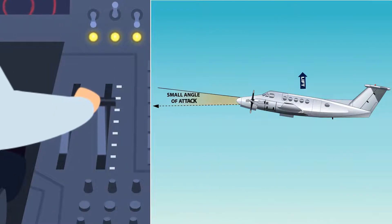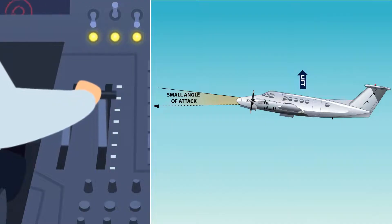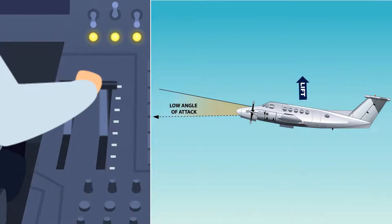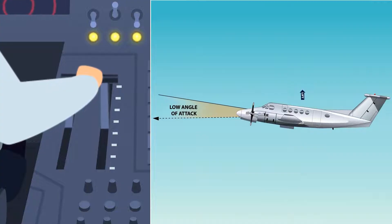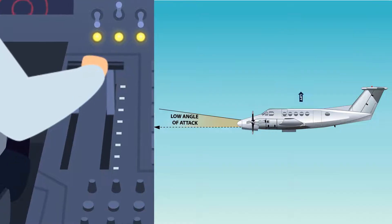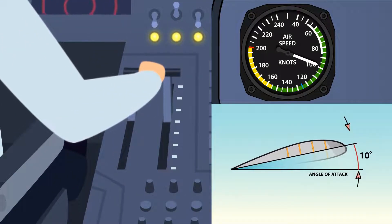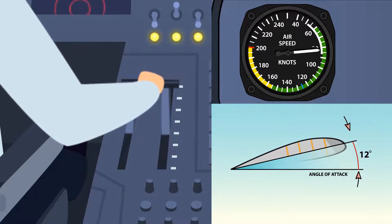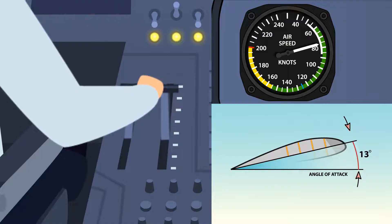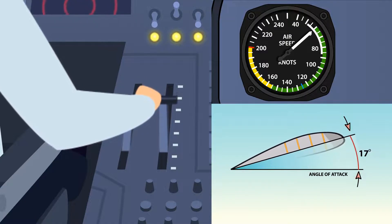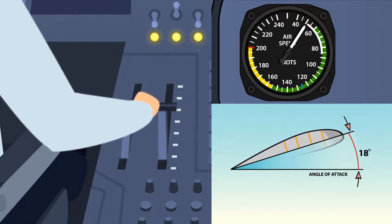If thrust is increased while in cruising flight, the aircraft speeds up and lift will increase. As lift increases, it is necessary to reduce the angle of attack in a timely manner so as not to gain altitude. Poor timing can result in unwanted climbs or descents. As airspeed varies to thrust, the angle of attack must also vary to maintain altitude. If thrust and speed decrease too much, the required angle of attack may increase to the critical angle of attack. Any further increase in angle of attack could lead to wing stalling.